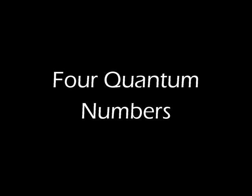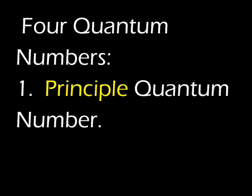The first quantum number is known as the principal quantum number. As its name implies, the principal quantum number serves as a basis upon which the other three quantum numbers are built. It is actually a whole number, and the lowest principal quantum number is one while the highest is seven.